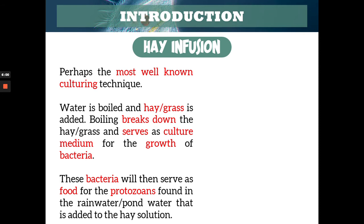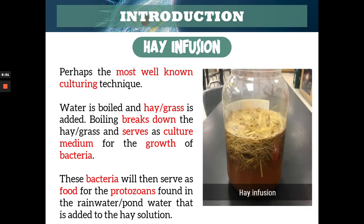And once there's already bacteria, then the protozoans will follow because the bacteria will serve as the food of protozoans. This is an example of a hay solution — you have the grass and the water, pond water or rainwater that we add to the boiled solution of hay, so that we can propagate the growth of the protozoans. In our case, we use canal water.